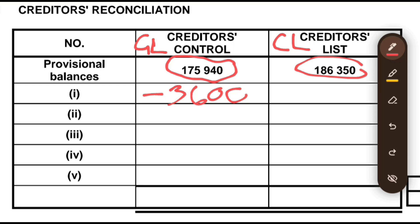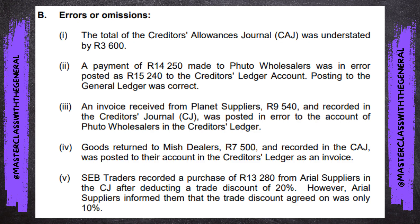Number two: a payment of R14,250 made to Pluto Wholesalers was in error posted as R15,240 to the creditors ledger account. Posting to the general ledger was correct. That last statement tells us this does not affect the general ledger — the creditors control was correct. So the correction is going to have to be made in the creditors list.